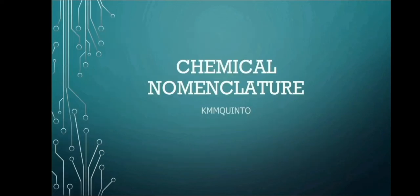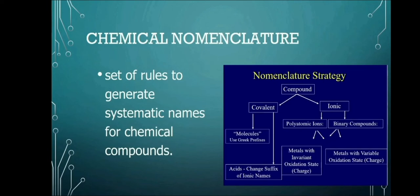If the melting point is higher, then of course it is stronger than the other element. When you say stronger, mas matibay yung bond kasi a larger amount of heat is needed to melt or break that bond. Do we get that? So, now, let's talk about chemical nomenclature. Chemical nomenclature is a set of rules to generate systematic names for chemical compounds.